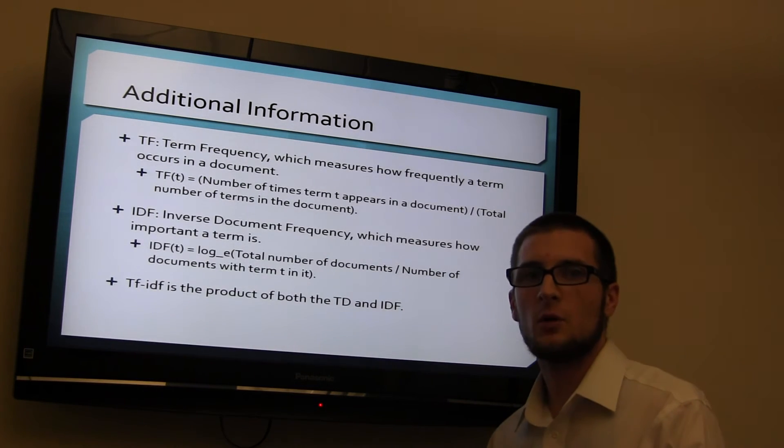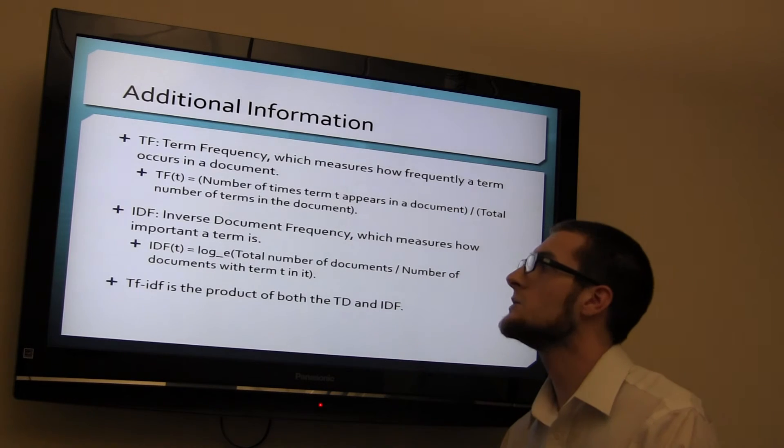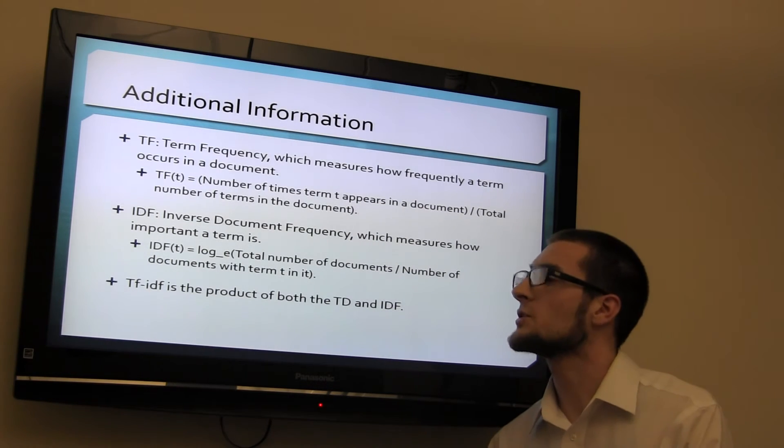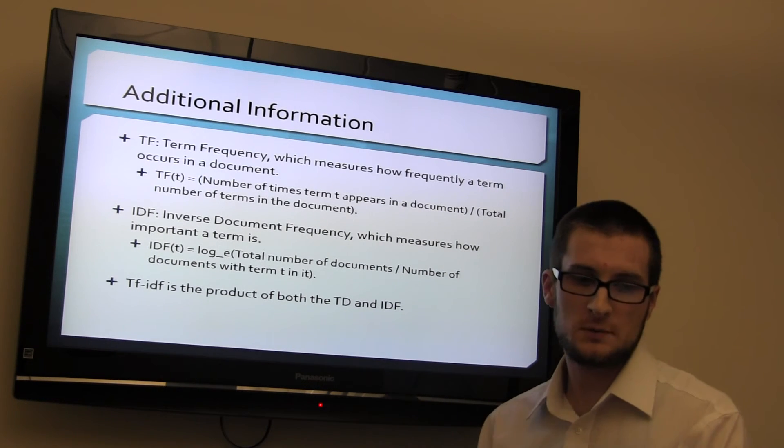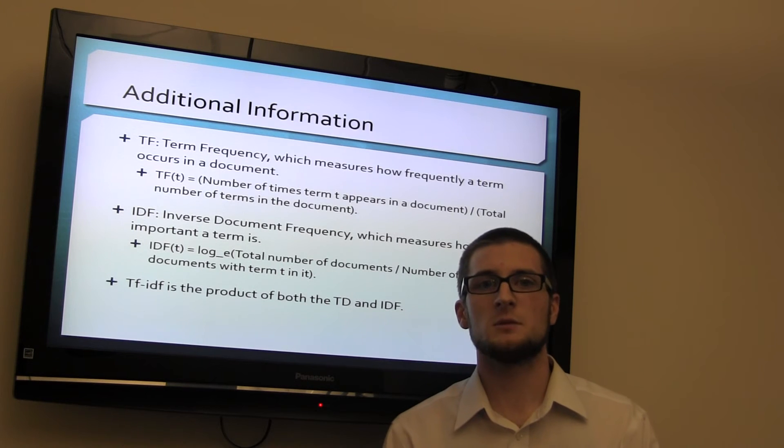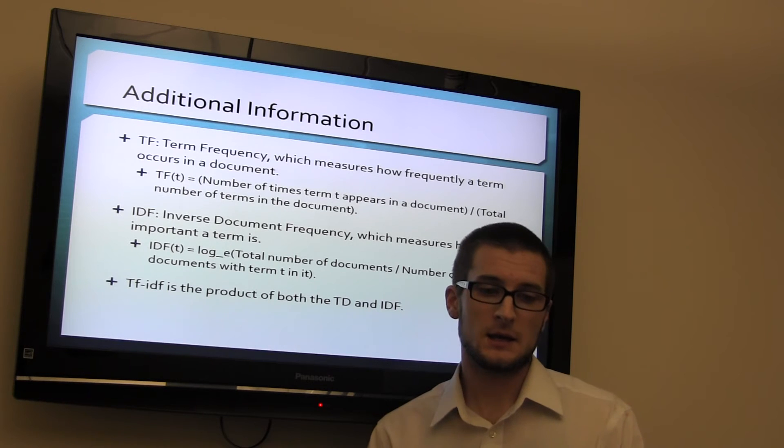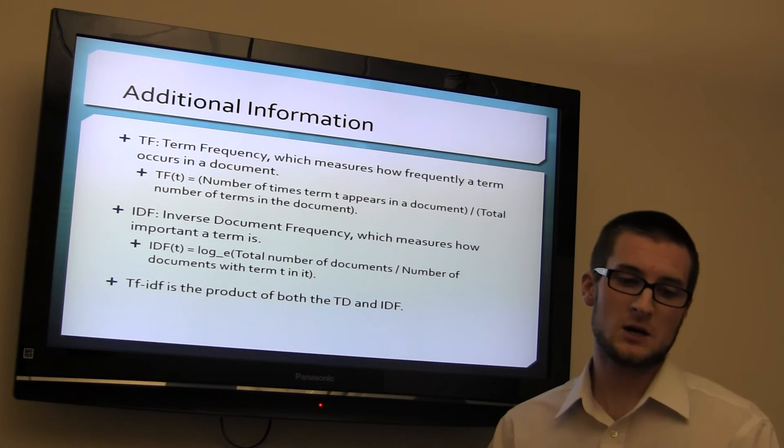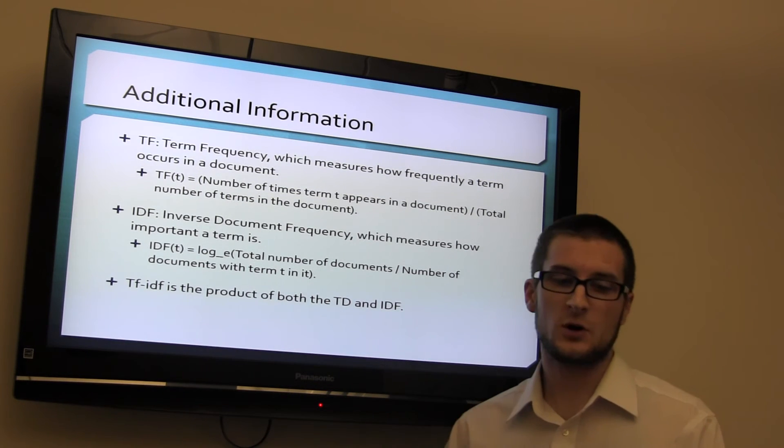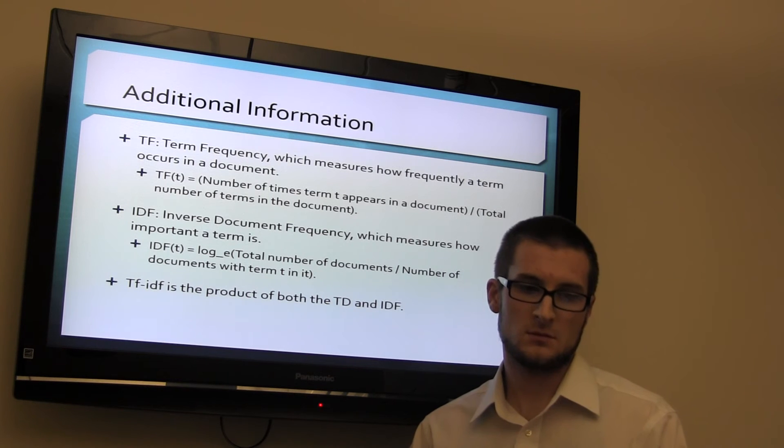Additional information in order to find both of them. First you need to find the TF, which is the term frequency, which measures how frequent a term occurs in a document. The formula for that, TF of T equals the times the term appears in a document over the total number of terms in a document.